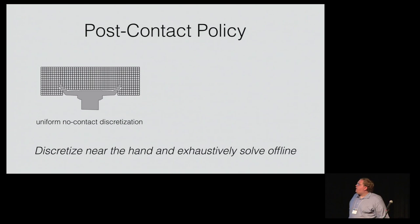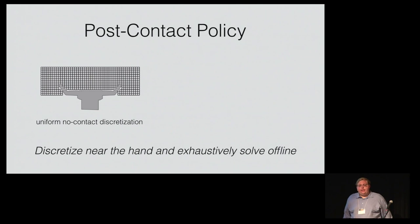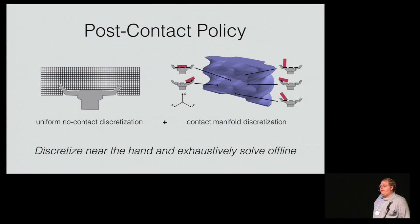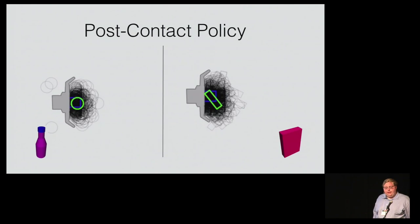First I'm going to discuss this post-contact stage. At a high level we just discretize the state space near the hand and solve it exhaustively using a point-based method. However, we have to be careful about how we do our discretization. You can't simply uniformly discretize the state space because this misses the ability for contact sensors to differentiate between contact and no contact. Instead we discretize free space uniformly and also discretize the surface of the contact manifold, which is a two-dimensional subspace of objects in non-penetrating contact with the hand. If you discretize the problem this way and solve using your favorite point-based solver you get policies that look something like this.